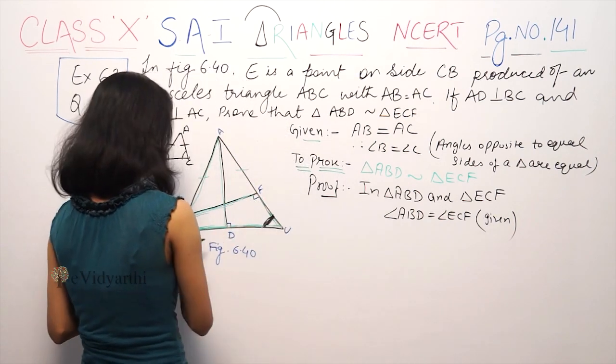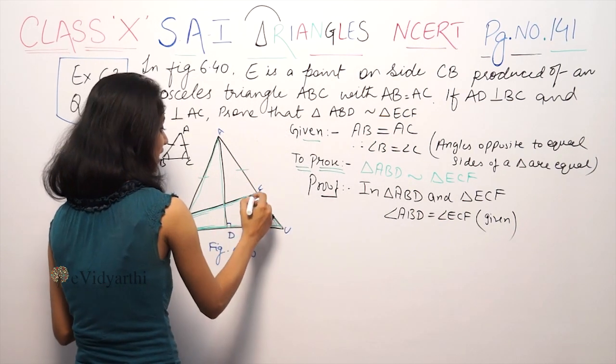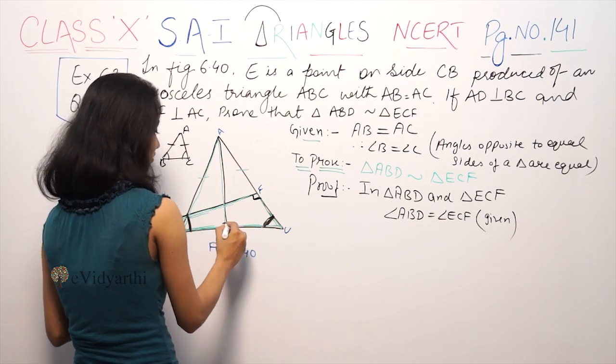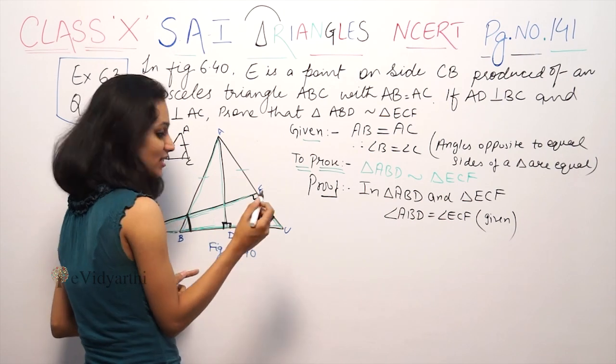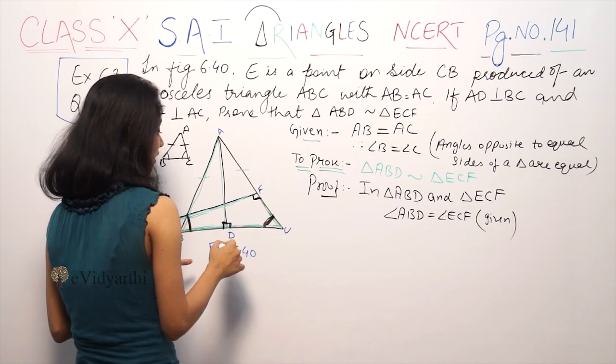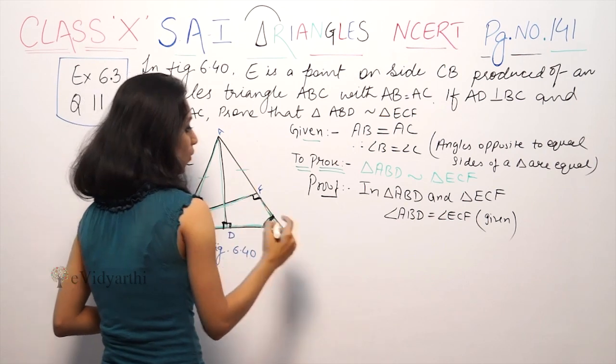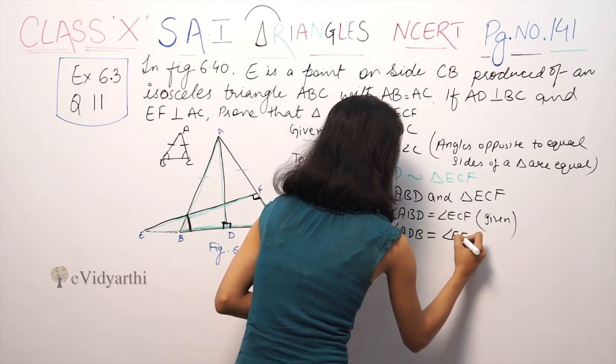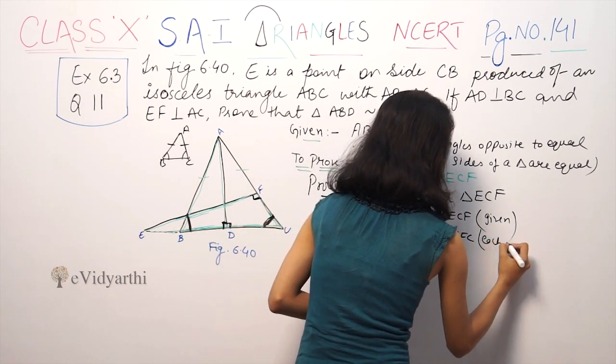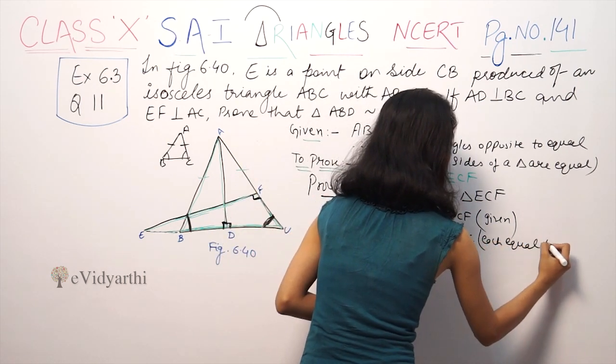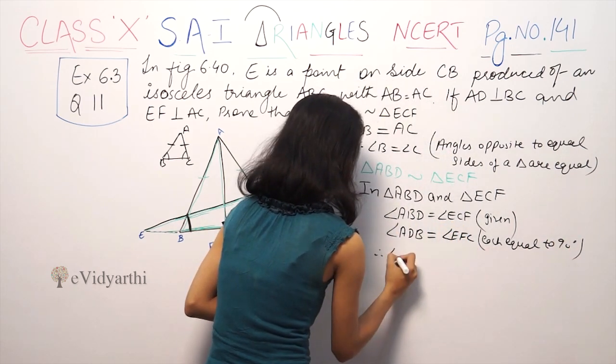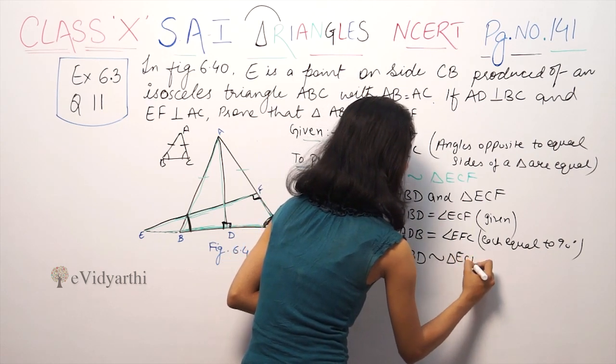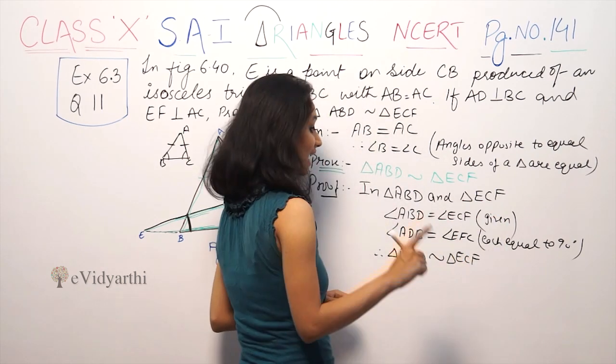Second thing, this angle is 90 degrees and this angle is 90 degrees. So angle ADB equals angle EFC, each equal to 90 degrees. Therefore triangle ABD is similar to triangle ECF by AA similarity criterion.